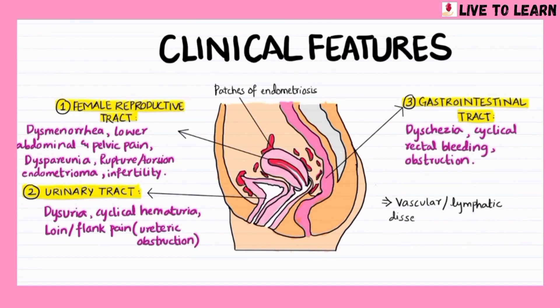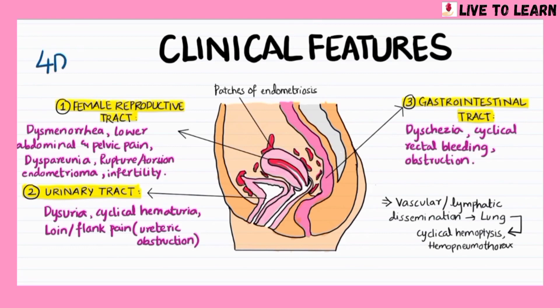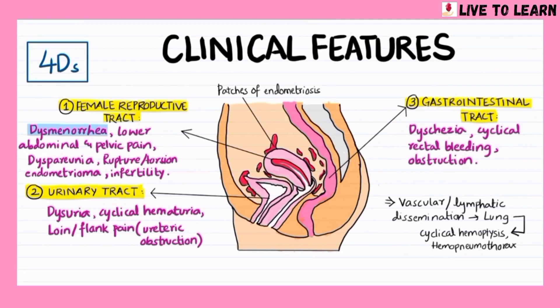Vascular or lymphatic dissemination of endometrial tissue to the lung can lead to cyclical hemoptysis and hemopneumothorax. The key indicators of endometriosis can be remembered by the 4 Ds, which include dysmenorrhea, dyspareunia, dysuria, and dyschezia.